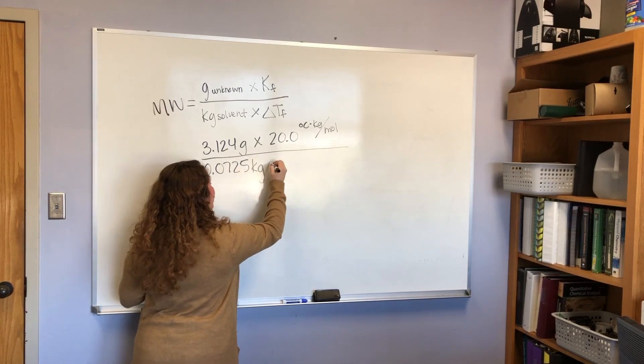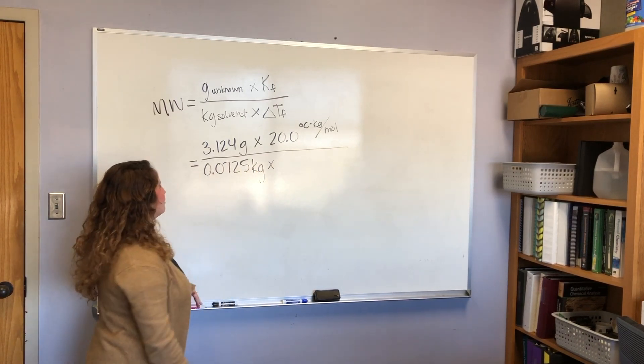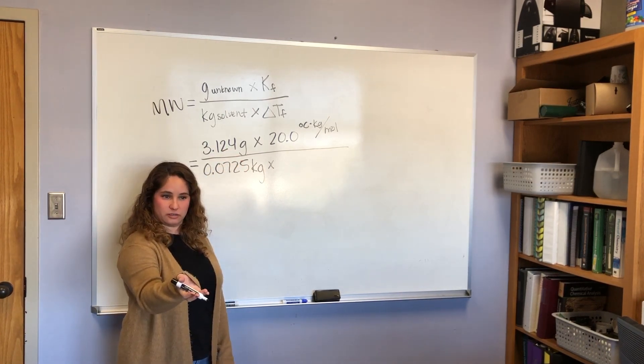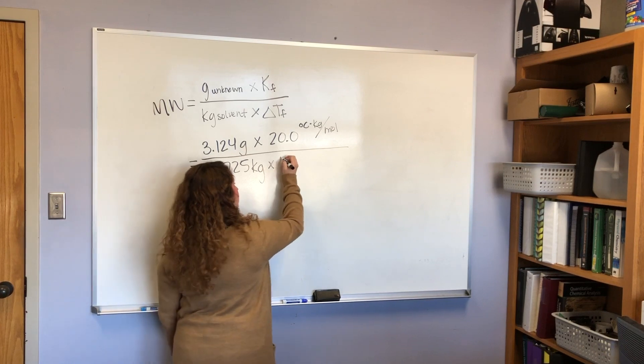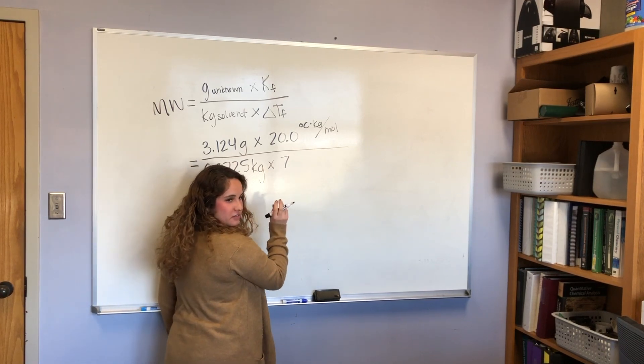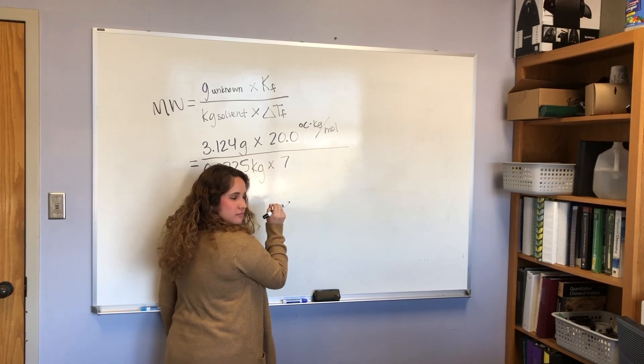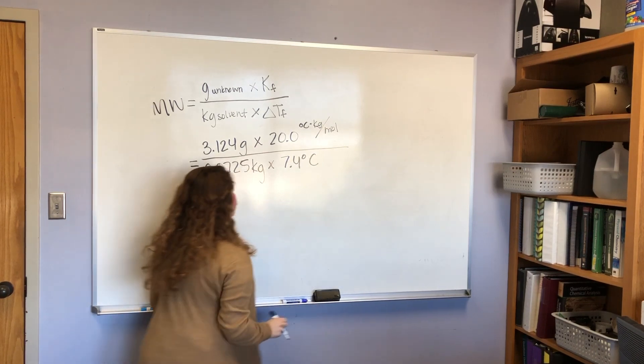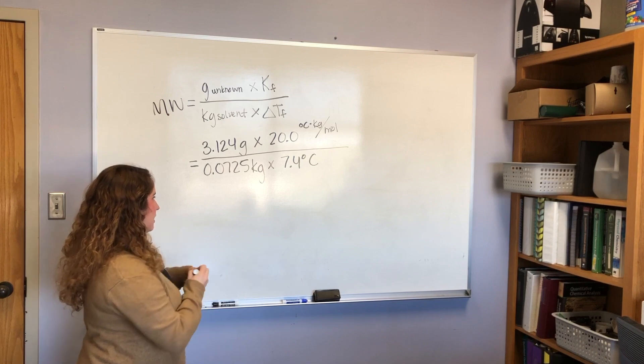Now we're going to multiply times our KF, which for cyclohexane is 20 degrees Celsius times kilograms per mole. So it's important that these units are here. I'm going to show you why in a second. And how many kilograms of solvent did we use Dr. Weber? 0.0725. Okay. Is that what you said? Okay. Close enough. Okay. Times our freezing point depression, which was how much? 7 degrees. 7 degrees. Is there a decimal place on that or is it just 7? I think it was 7.4 degrees. 7.4 degrees? Okay. Okay, great.